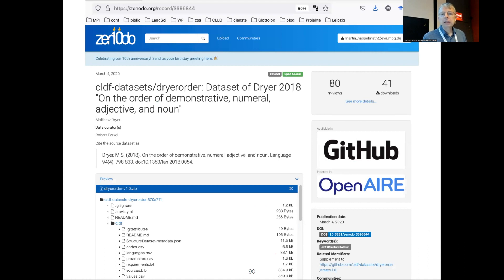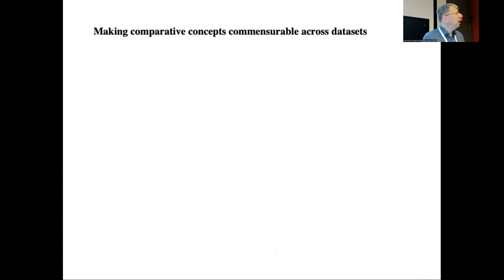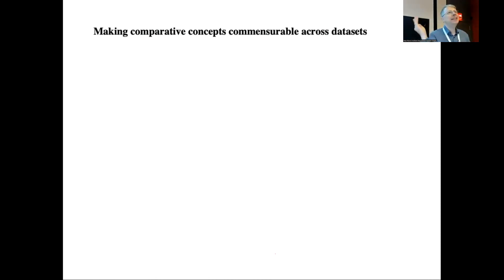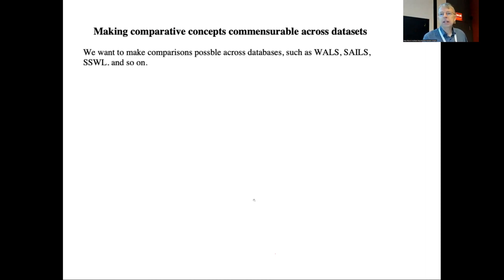That brings me to the end of this part, but looking a bit more at the future, I've been thinking about ways of making comparative concepts commensurable across datasets. This is not part of CrossGram yet, but it's an idea. We want to make comparisons possible across datasets such as WALS, SSWL, and the various datasets in CrossGram.